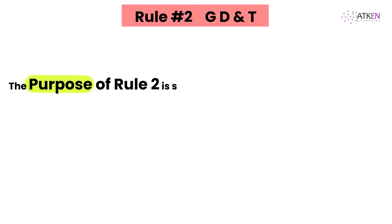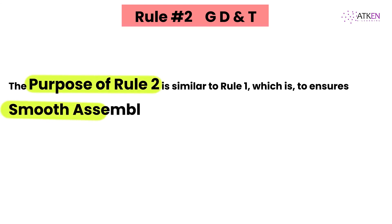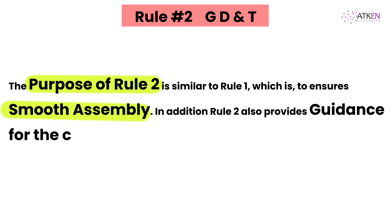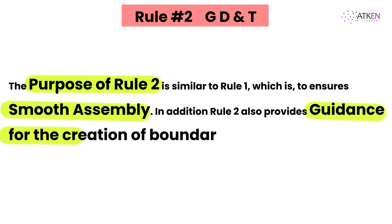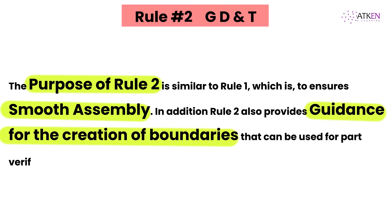The purpose of Rule 2 is similar to Rule 1, which is to ensure smooth assembly. In addition, Rule 2 also provides guidance for the creation of boundaries that can be used for part verification during manufacturing.